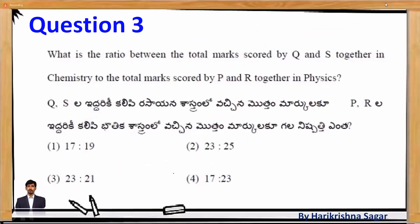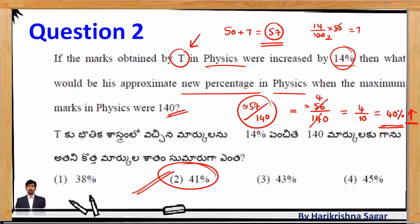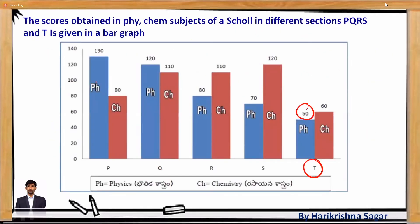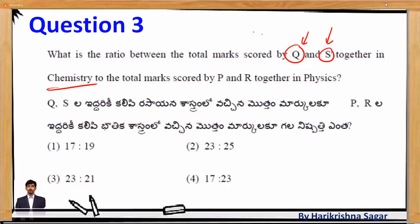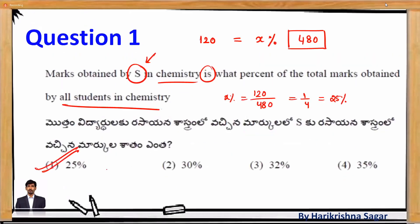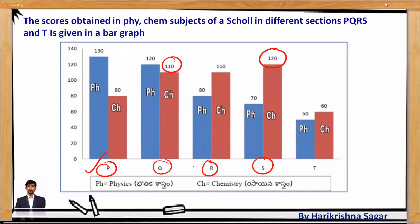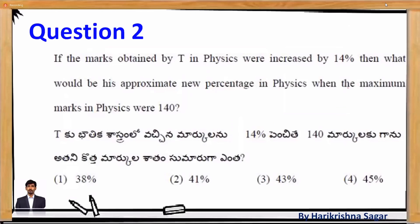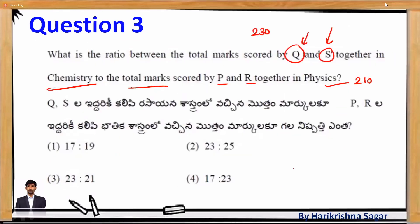The third question: what is the ratio between the total marks obtained by Q and S together in chemistry, to the total marks obtained by P and R together in physics? Q in chemistry = 110, S in chemistry = 120; total = 230. P in physics = 130, R in physics = 80; total = 210.